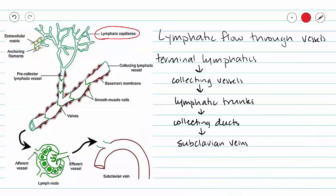From our lymphatic capillaries we are going to join into ever increasingly large vessels. From our lymphatic capillaries we travel into collecting vessels, then into lymphatic trunks which drain a particular area of the body such as your right arm. These lead into collecting ducts which are fairly large, and then our collecting ducts are going to empty our lymph into our right and left subclavian veins. Once our lymph enters our subclavian veins it flows to our heart where it enters normal pulmonary and systemic circulation.